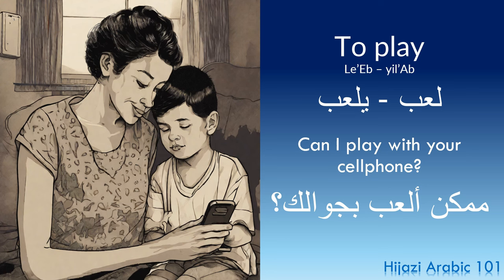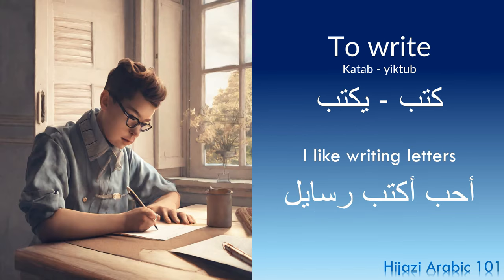To play. Past tense: la'ab. Present tense: yil'ab. Example: 'Can I play with your phone?' — 'Mumkin al'ab bijawalik?' Jawal is a cell phone and jawalik means 'your cell phone.' To write. Past tense: katab. Present tense: yiktab. Example: 'I like writing letters' — 'Ahub aktub rasa'il.' Rasa'il is the plural form of risala, meaning 'a letter.'